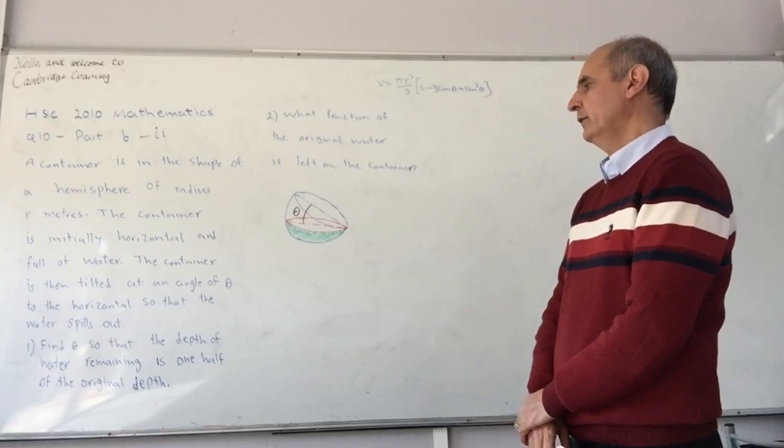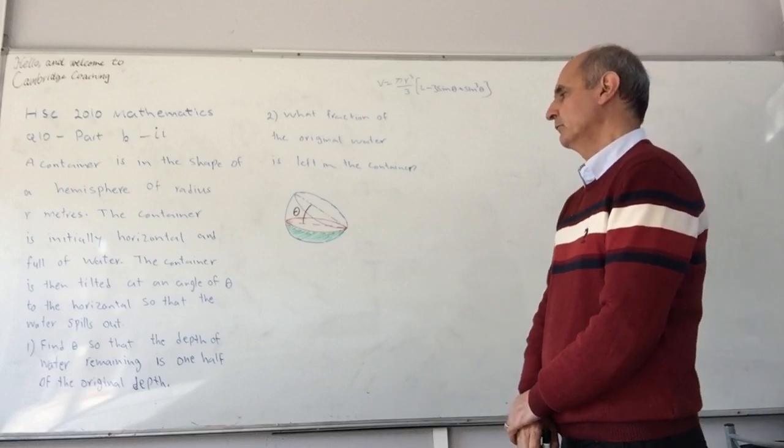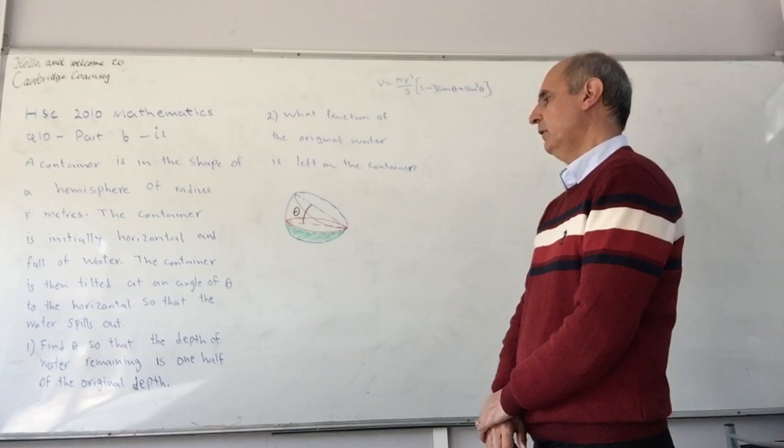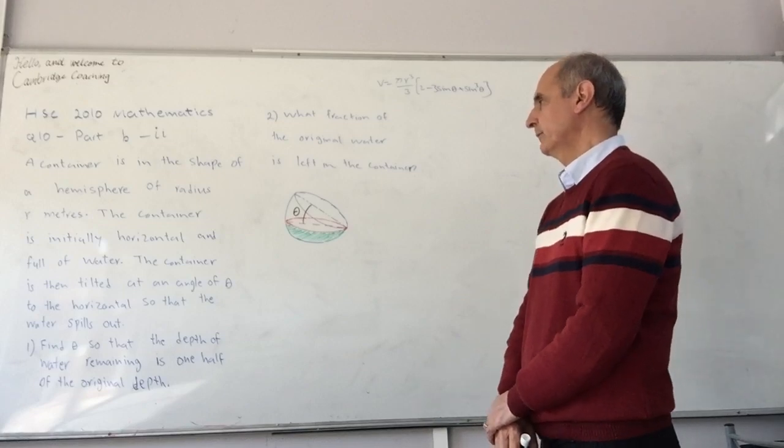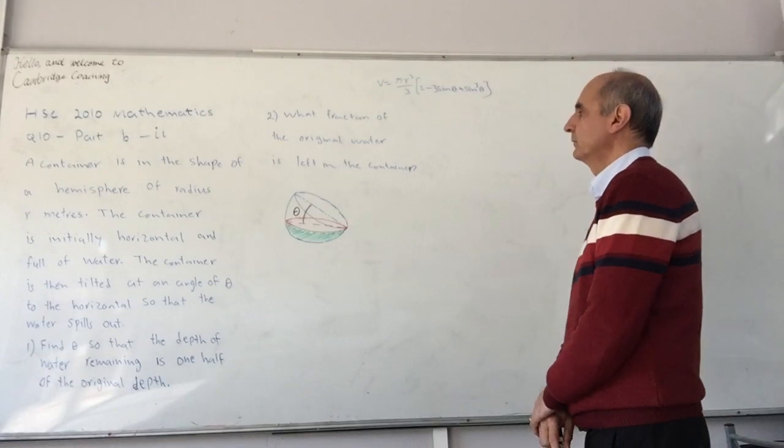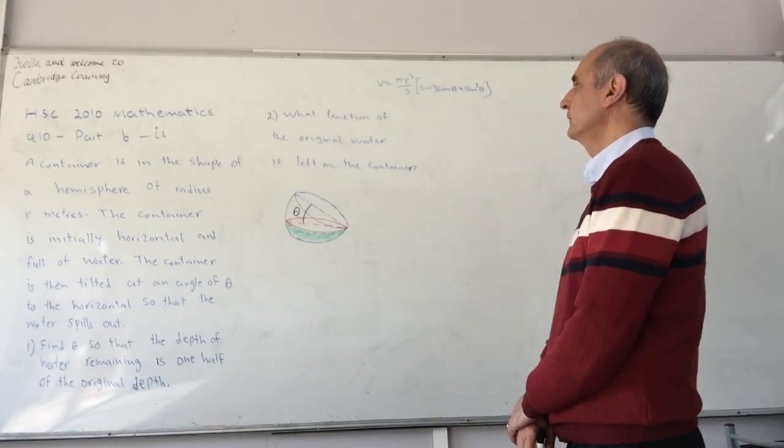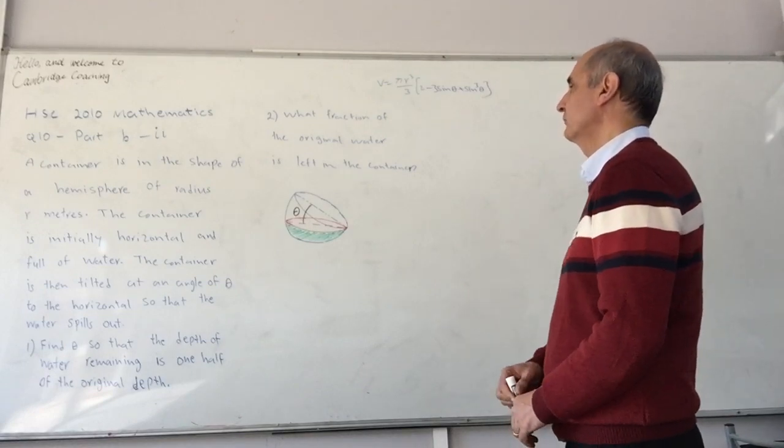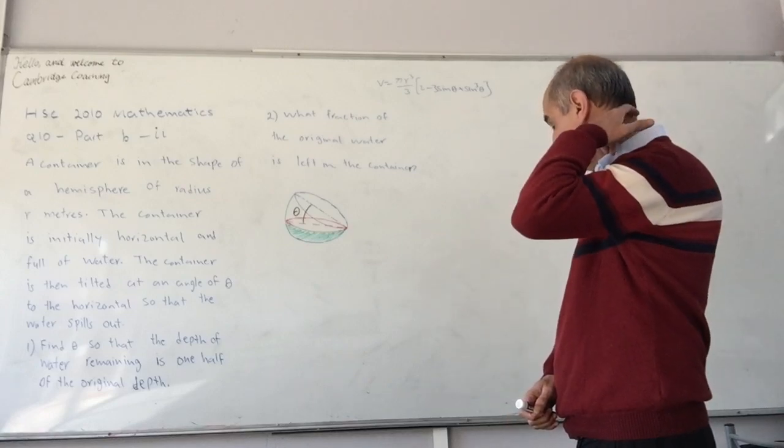One, find theta so that the depth of the water remaining is one half of the original depth. Part 2, or question 2 of that is what fraction of the original water is left in the container?